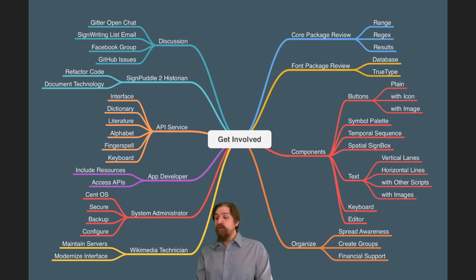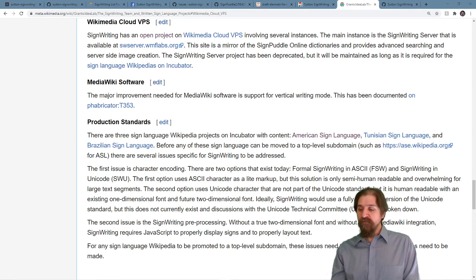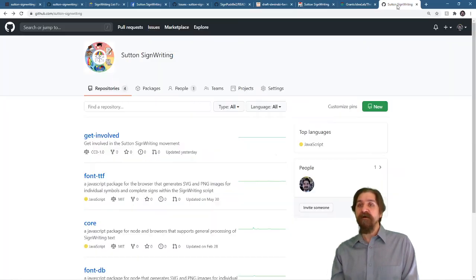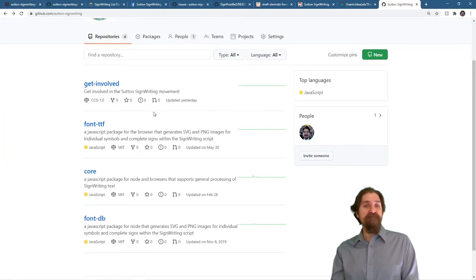And then we get on to the core. The core package for sign writing and the font packages. Those are ready for review right now. You can find those on GitHub, where we have the font TTF, the core and the font database package. Let's look at the core.